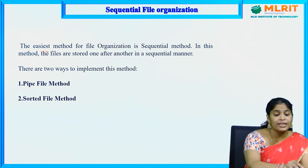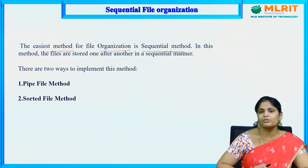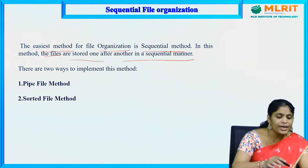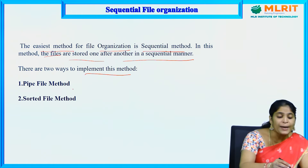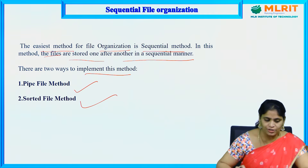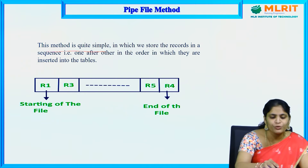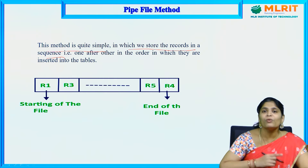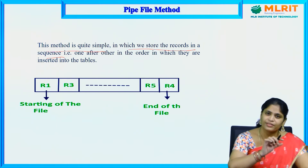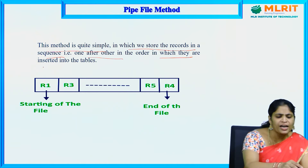What is sequential file organization? The easiest method for file organization is the sequential method. In this method, files are stored one after the other in a sequential manner. There are two ways to implement this method: the pile file method and the sorted file method. In the pile file method, records are stored in a sequence — one after the other, in the order in which they are inserted into the tables.